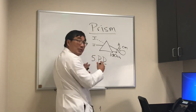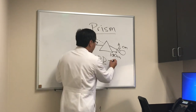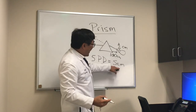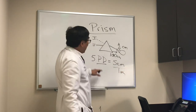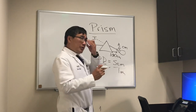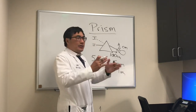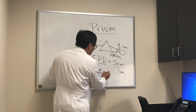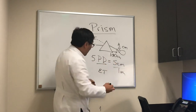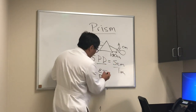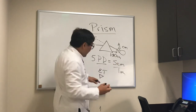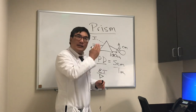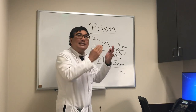A 5 prism diopter prism displaces 5 centimeters vertically at 1 meter. We can use these prisms both to measure and to displace images for clinical purposes. So if a patient has an esotropia and their eyes are turned in, we would put the prism with the apex facing the deviation and perform the cover-uncover test and the alternate cover test until the eyes cease to move.